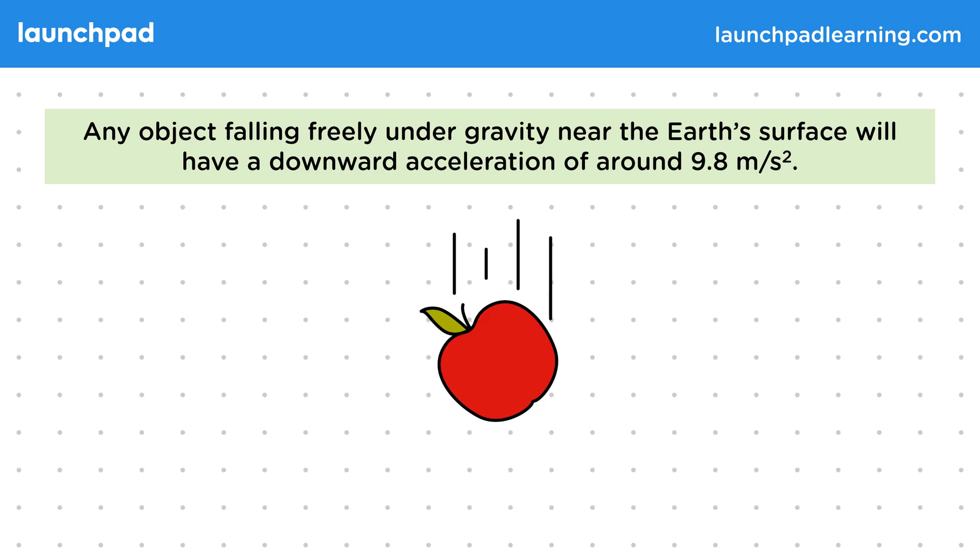Let's look at this example of an apple. Here we can say that the apple is falling freely under gravity as the only force acting on it is its own weight. Now the weight is given by mg, where m is the mass of the apple and g is the gravitational field strength.